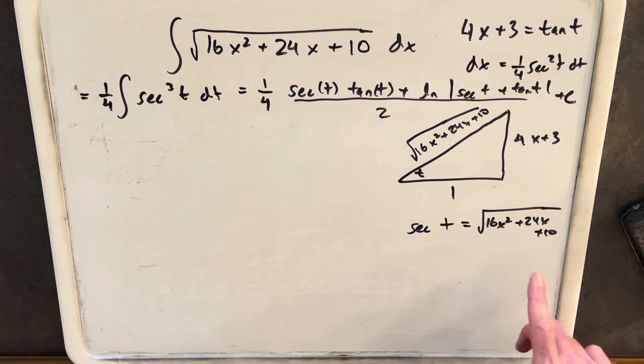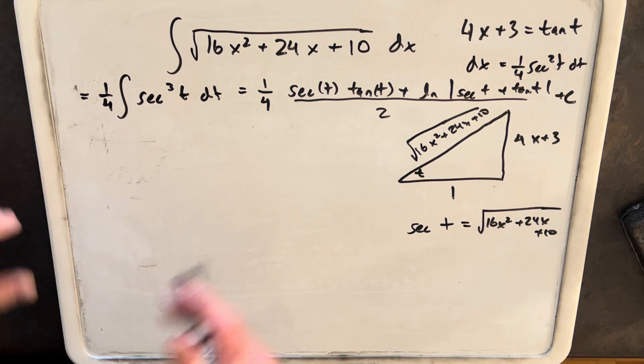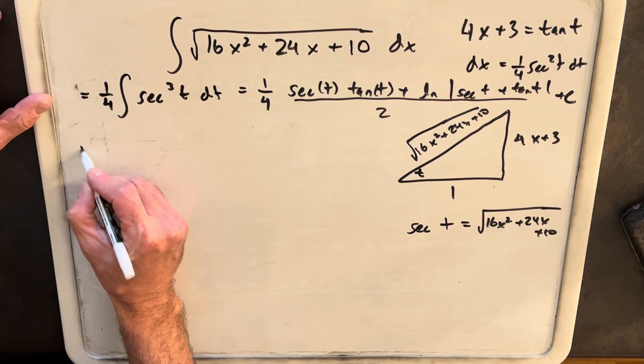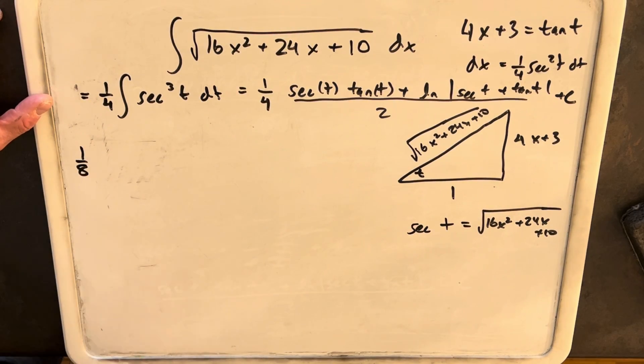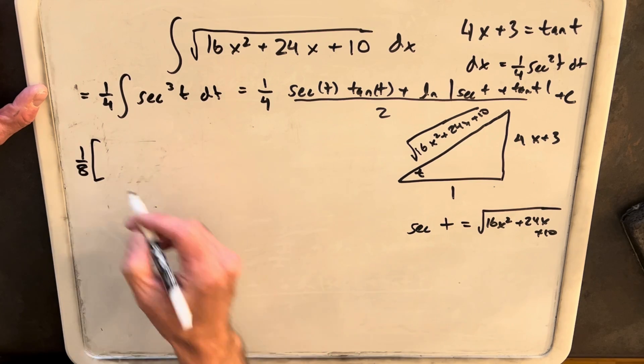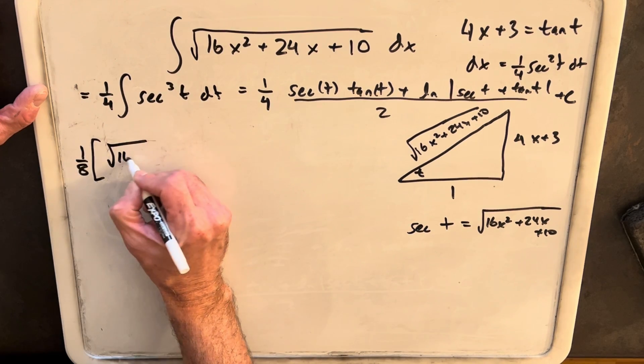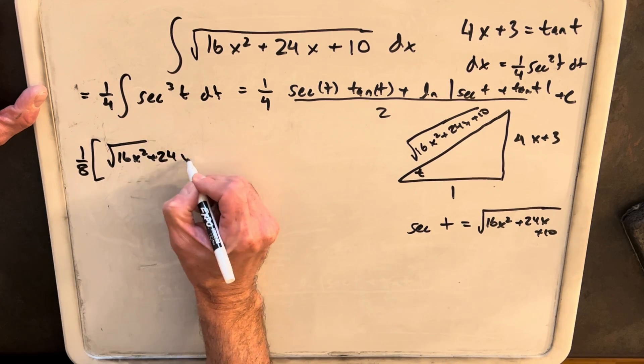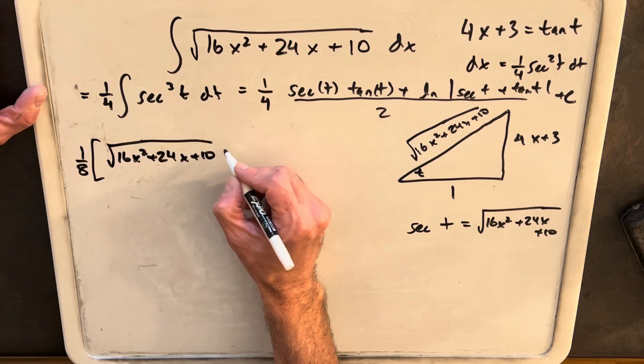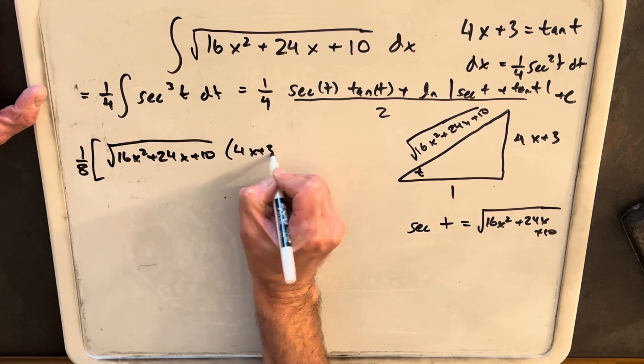So then all we need to do now is just plug all this messy stuff back in and then we should be done. So I'm going to take our 1 fourth and a half. We're going to have an eighth out front. Our secant is going to be this. Unfortunately, I think I have to write that a bunch of times, so we'll just do it. Tan of t is going to be 4x plus 3.